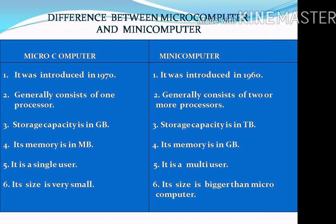What is the difference between microcomputer and mini computer? Microcomputer was introduced in 1970, while mini computer was introduced in 1960. Microcomputers generally consist of one processor; mini computers generally consist of two or more processors. Microcomputer's storage capacity is in GB; mini computer's storage capacity is also in GB. Microcomputer's memory is in MB, but mini computer's memory is in GB. Microcomputer is a single-user, but mini computer is a multi-user.